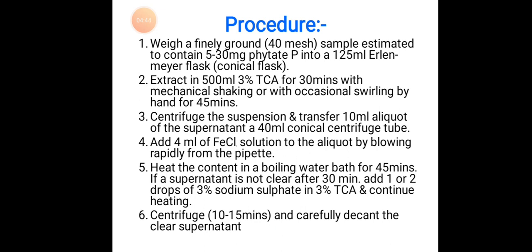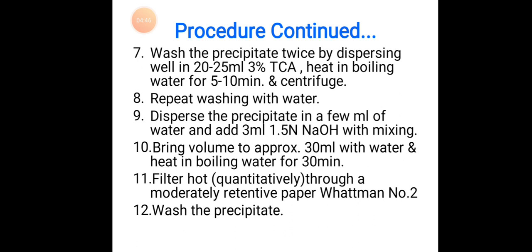Wash the precipitate twice by dispersing well in 20 to 25 ml 3% TCA, heat in boiling water for 5 to 10 minutes and centrifuge. Repeat washing with water.